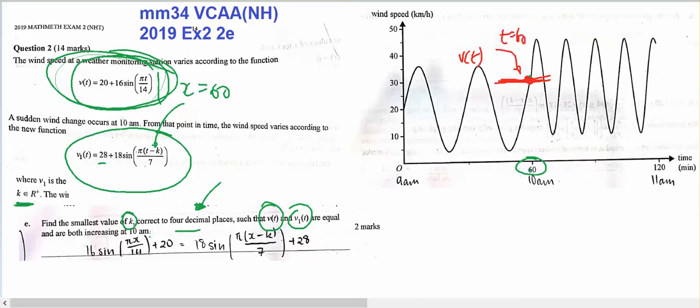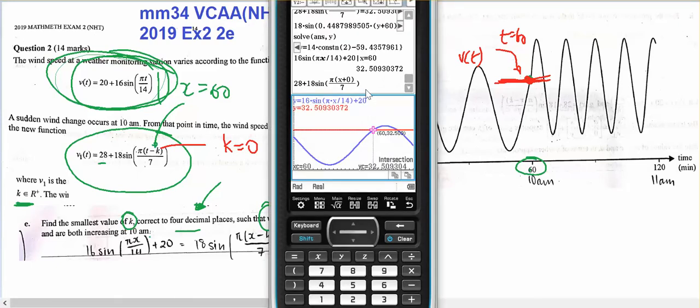So what I'd like to do is find out if k equals 0, where would it be, and therefore I can work out how much I need to slide it across. So I've got this which is w v1, and I've made k equal to 0. I'm going to drag and drop that and I can see that it's over here.